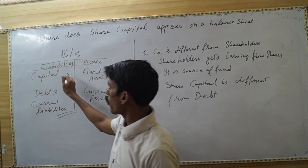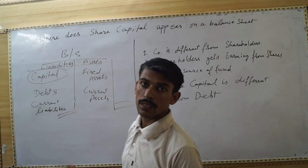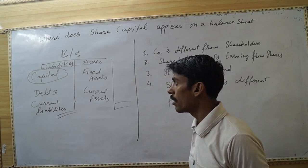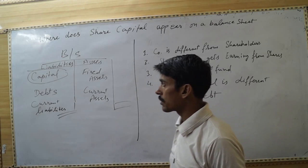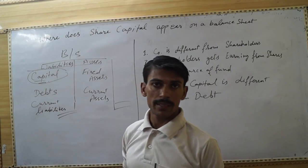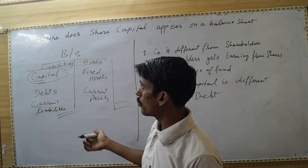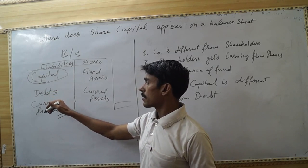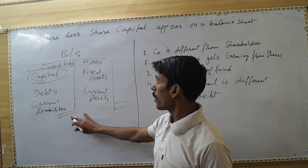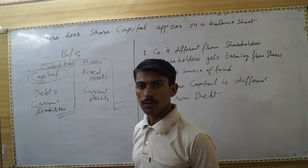Whether it is an individual business, a partnership, or a company level business, capital must be shown on the liability side. We also show debts and current liabilities, and the total will always equal the total assets.